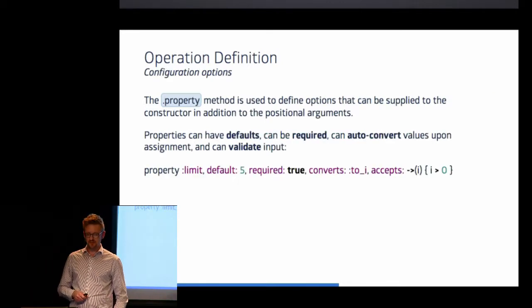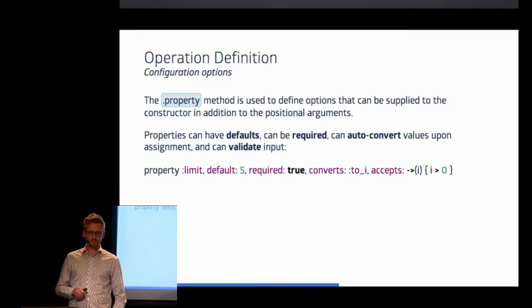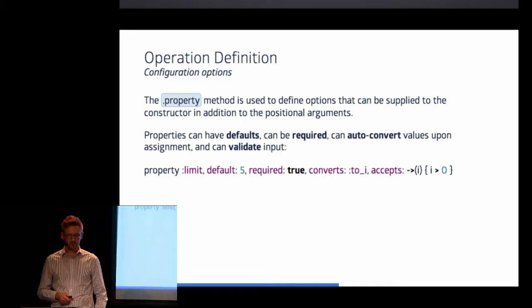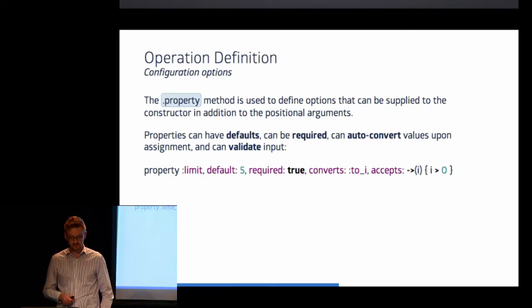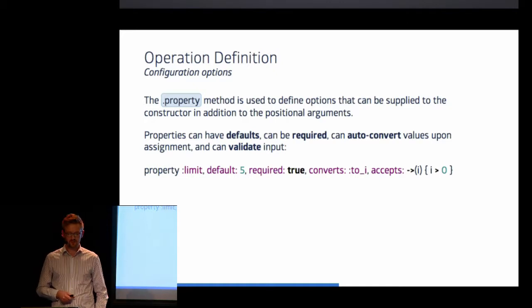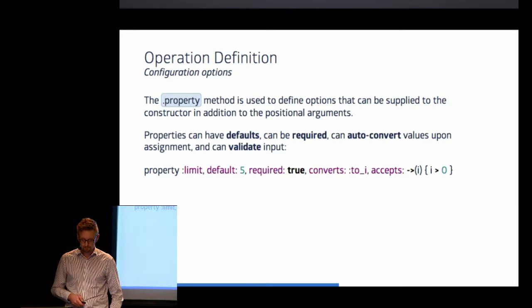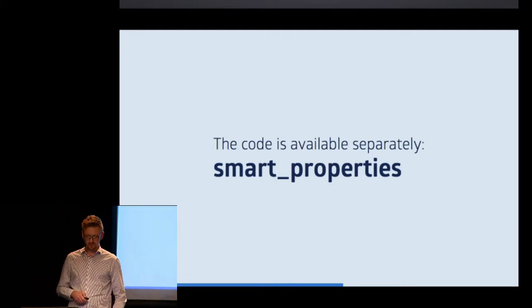Then there is the macro method property, and this method is used to provide configuration options. Again, these are supplied as keyword arguments to the constructor of your operation. And properties are simply better Ruby assessors, in the sense that they provide default values, that you can flag them as mandatory, that they provide autoconversion upon assignment, and that they provide the possibility of validating the input. And the example, below on the slide, implements a property called limit, which has a default of 5, is flagged as required, and converts any value upon assignment into an integer, and finally checks that this integer is greater than 0. If you like the idea of these properties, I extracted the code out into a separate gem called smartProperties.